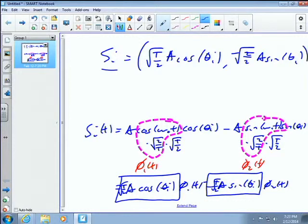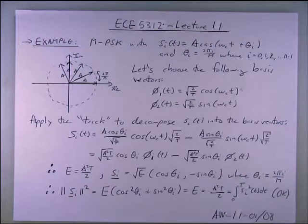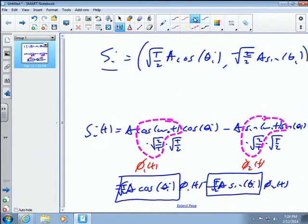The energy of this signal is equal to A²T/2. The vector components each have magnitude √(A²T/2). This means that for phase modulation, every signal point is the same distance from the origin — they're all fixed on that circle. We can shorthand this as √(E_i), which is the same for all i.